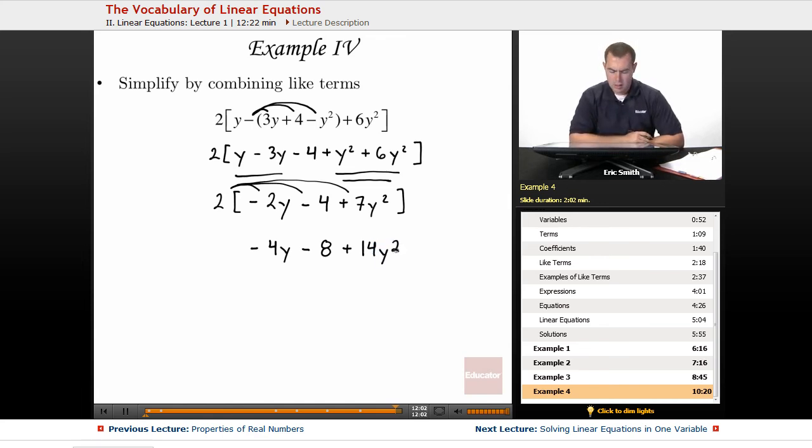Alright, so my final answer would be negative 4y minus 8 plus 14y squared. I wouldn't combine those any more together because none of those are like terms. I have a single y, I have an 8, doesn't have any variables whatsoever, and I have that y squared. Definitely not like terms. Alright, so thanks for watching educator.com.